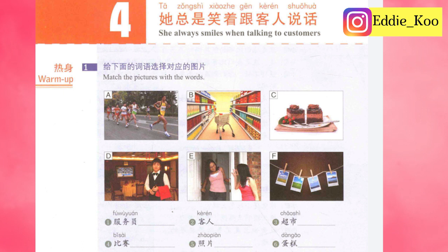二，客人。Guests. 三，超市。Supermarket. 四，比赛。Match or competition. 五，照片。Photo or picture. 六，蛋糕。Cake.